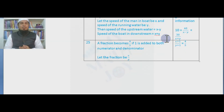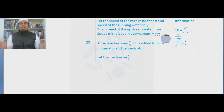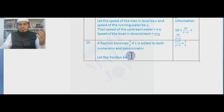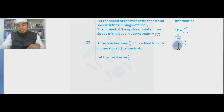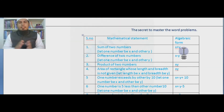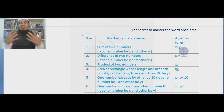The last topic: fraction problems. A fraction becomes 4/5 if one is added to both the numerator and denominator. Let the fraction be x/y. Adding one to numerator and denominator gives (x + 1)/(y + 1) = 4/5. I hope this is enjoyable. If you need more practice converting mathematical statements to algebraic form, please watch this video once again and try to make equations from your problems. Let us move on to solve the problems — thank you.